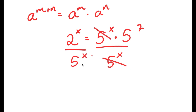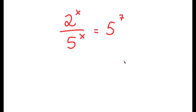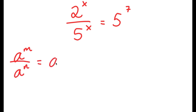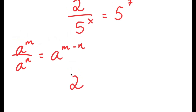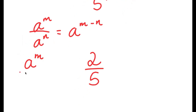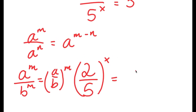These two cancel out, and I get 2 to the power of x over 5 to the power of x is equal to 5 to the power of 7. Now, an important property of exponents is that a to the power of m over b to the power of n is equal to a over b to the power of m. So 2 to the power of x over 5 to the power of x equals 2 over 5 to the power of x. And this is equal to 5 to the power of 7.